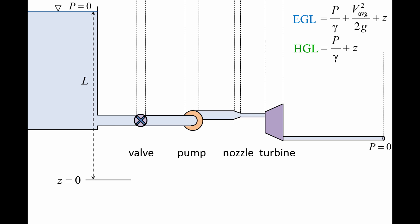At the top of the reservoir, the flow speed is 0, the gauge pressure is 0, and the elevation is L. Since the velocity is 0, both the EGL and HGL curves at the top of the reservoir are equal to the height L.